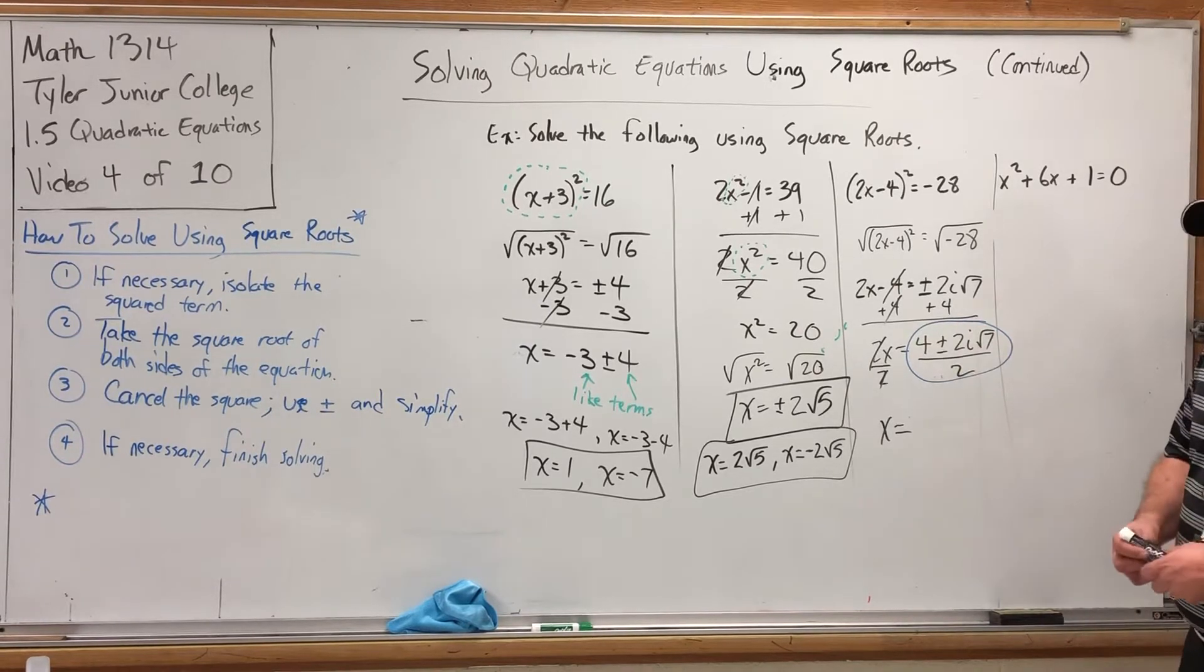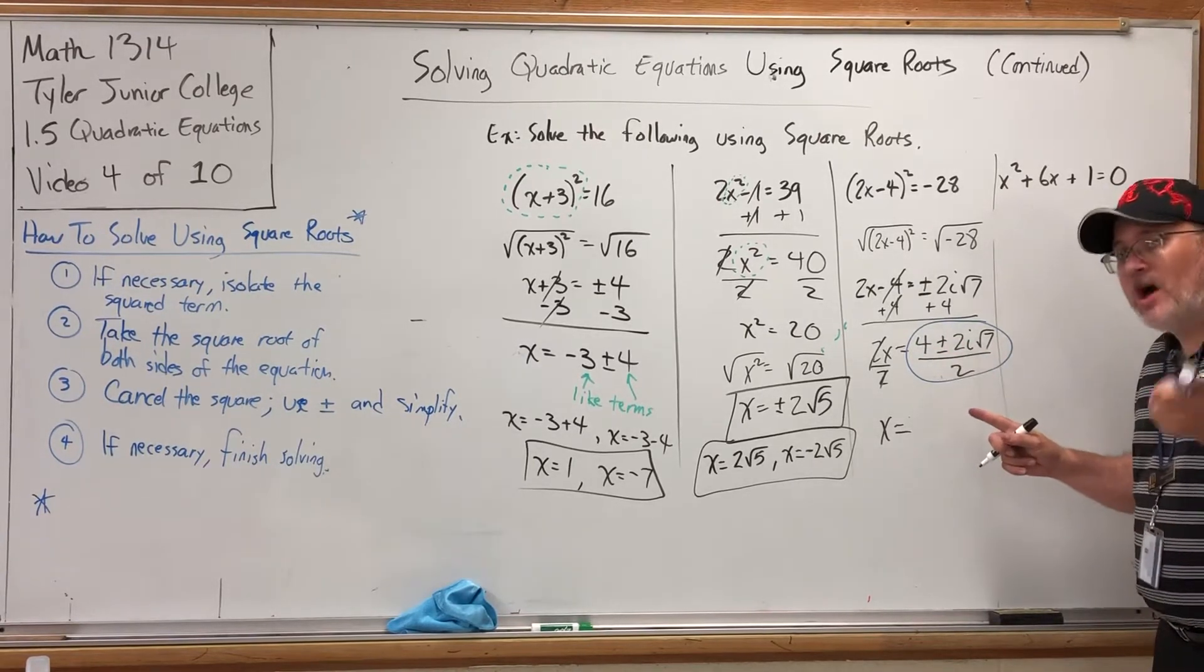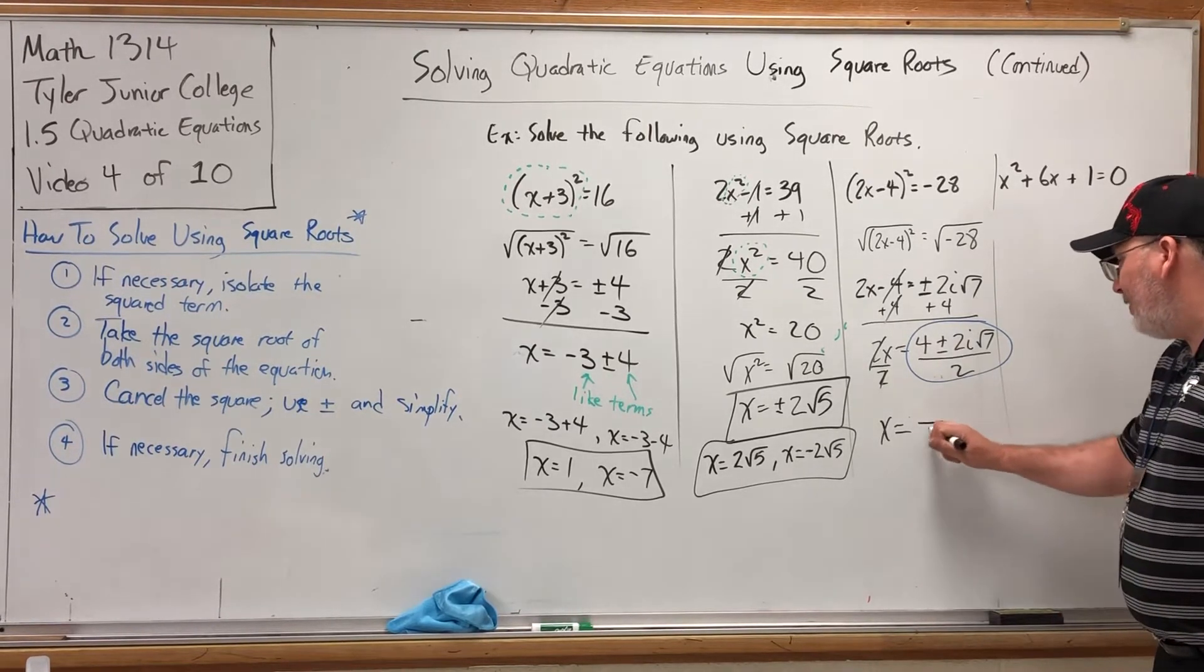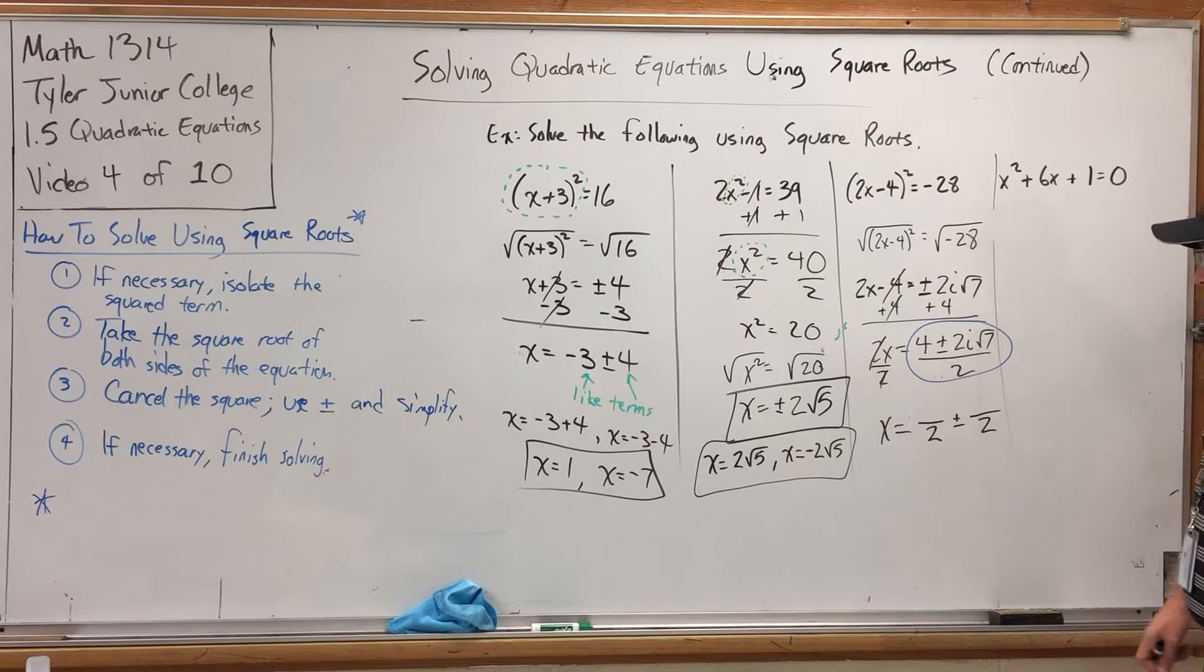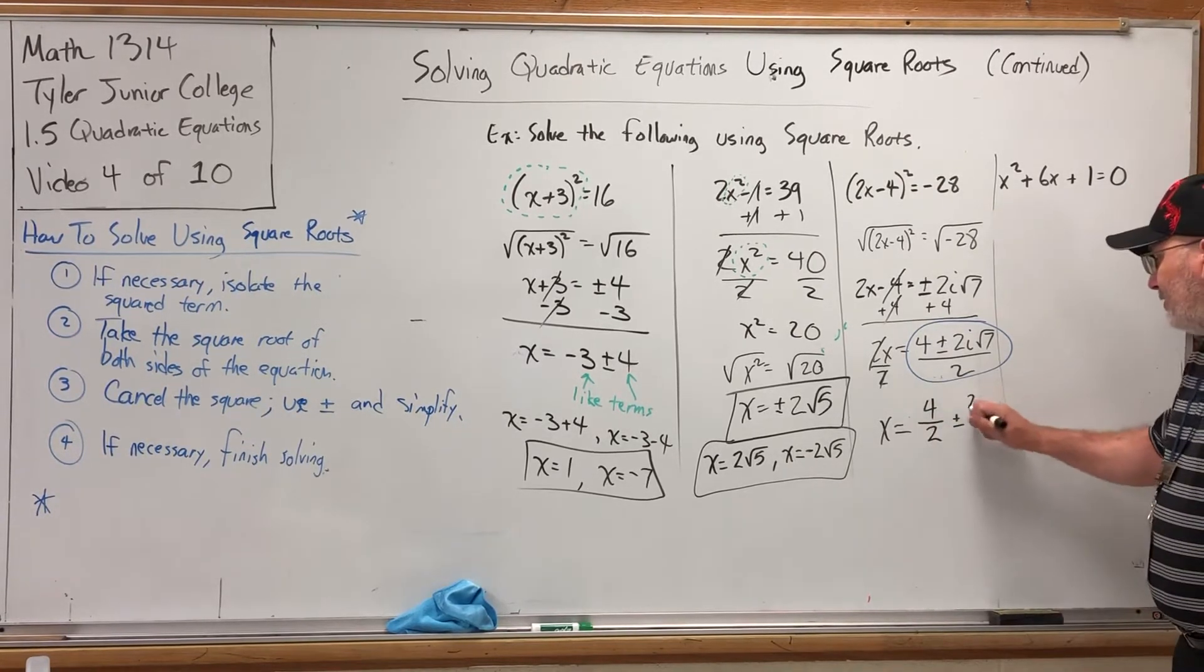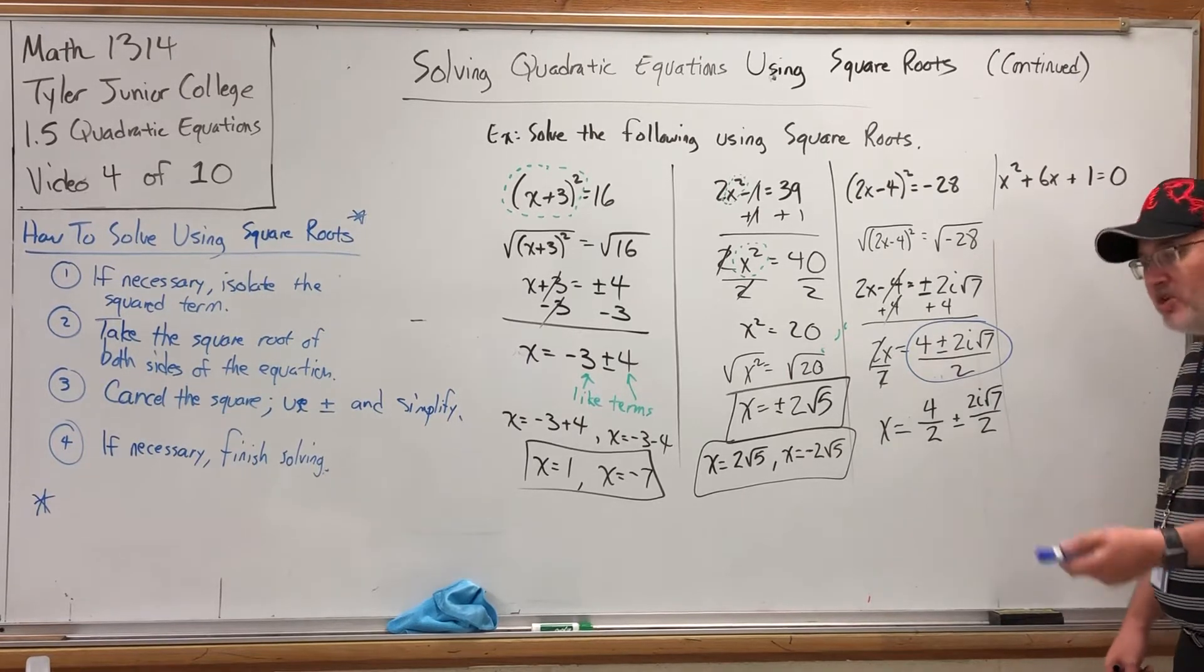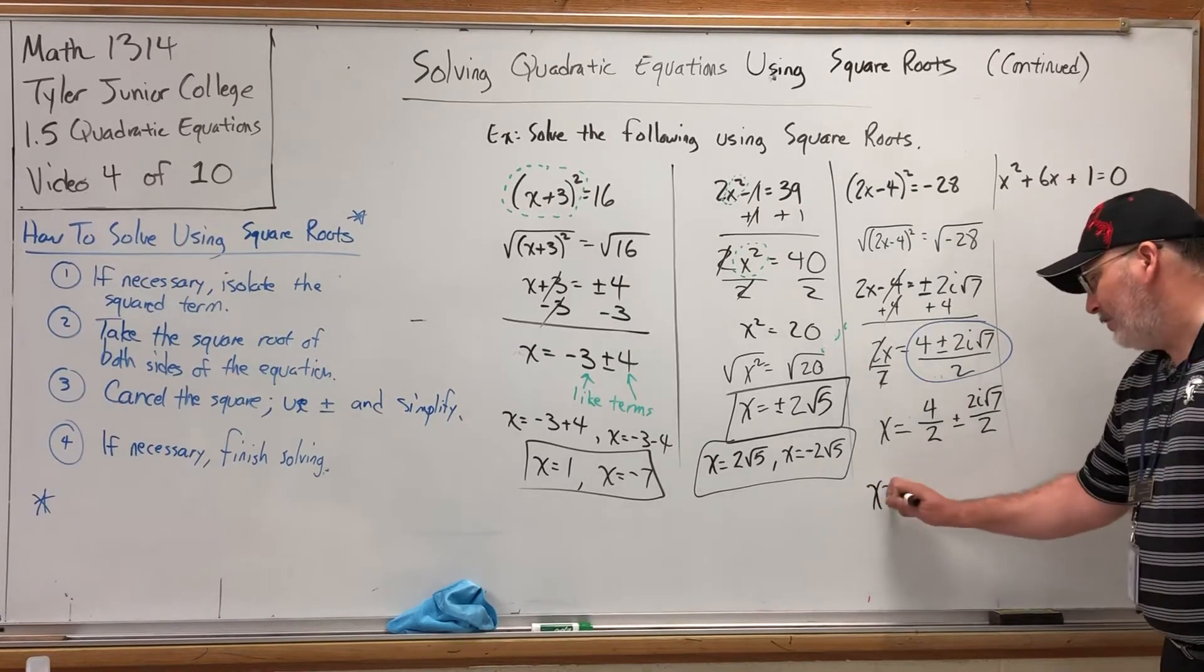If you have a fraction with a multi-term numerator but a single-term denominator, in this case 2, you can split it into multiple fractions by giving each term on the top its own common denominator. So we're going to split this fraction across the plus-minus. The 4 is going to get its own denominator of 2, and the 2i√7 is going to get its own denominator of 2. By making that split, it removes the plus-minus from the fraction and takes away the only obstacle that was preventing us from reducing.